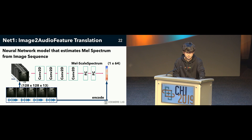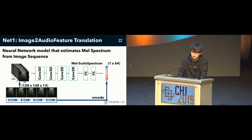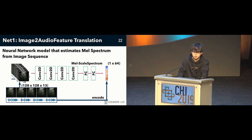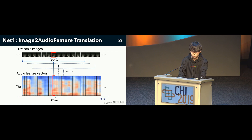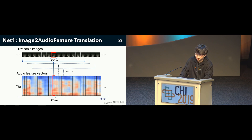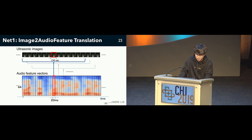Net1 was trained using a dataset of approximately 5,000 utterances of Alexa commands collected by participants. The speech in the dataset was encoded into a spectrum and used as target data. Our system is user-dependent; datasets should be collected and the network trained for each user. Each acquired piece was estimated, and each 64-dimensional feature vector output was arranged to create a sequence of audio feature vectors. We then used the Griffin-Lim method to recover the speech.